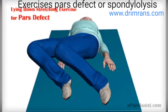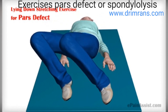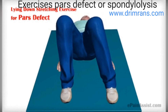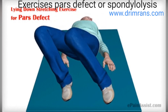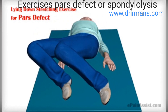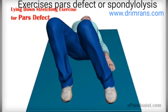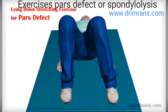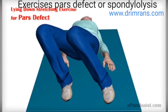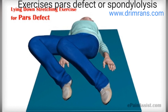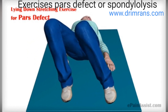A pars defect or spondylolysis is a stress fracture of the bones of the lower spine. These fractures typically occur due to overuse. They can be on one or both sides of the vertebrae. It is a common cause of low back pain in children and adolescents.